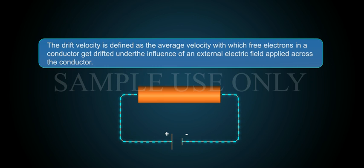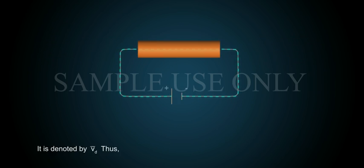The drift velocity is defined as the average velocity with which free electrons in a conductor get drifted under the influence of an external electric field applied across the conductor. It is denoted by vd bar.